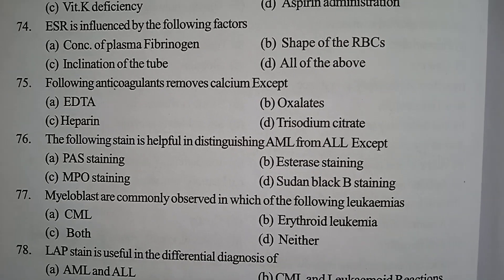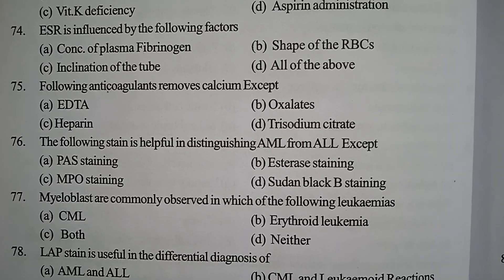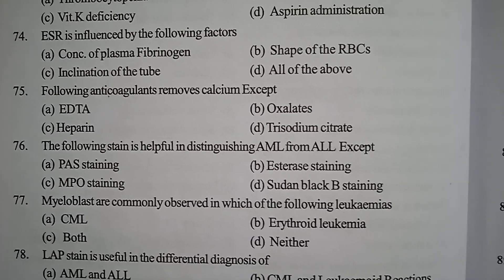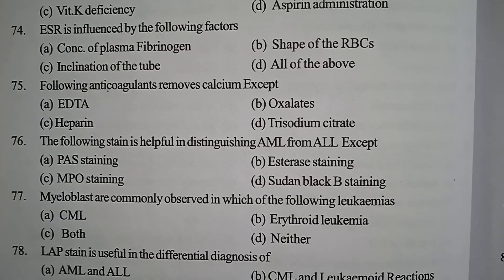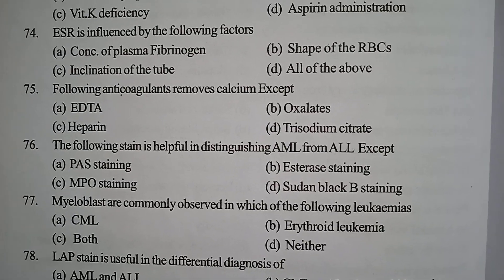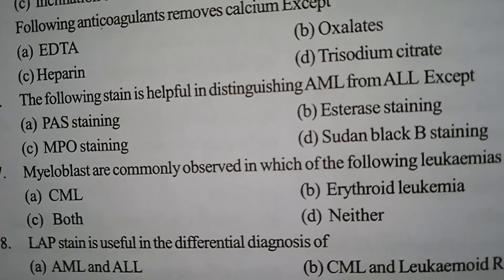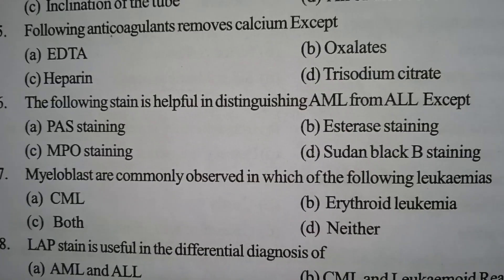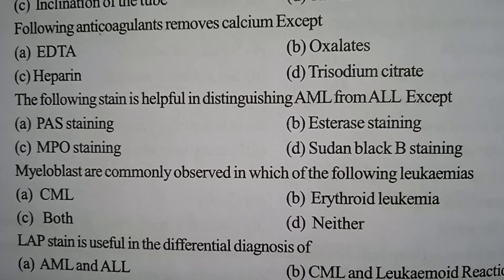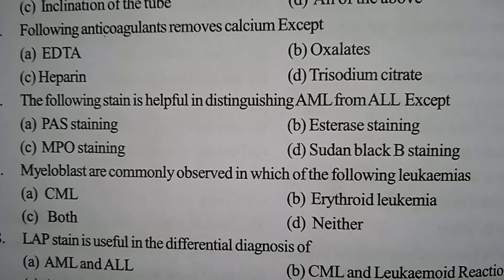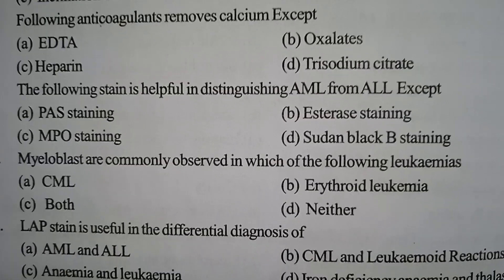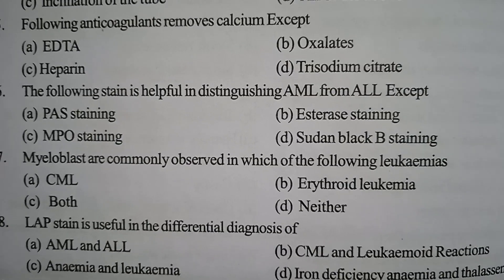Next one: myeloblasts are commonly observed in which of the following leukemias? Option A: CML. Option B: erythroid leukemia. Option C: both. Option D: neither. Correct answer: option C, both — in both cases myeloblasts are commonly observed.